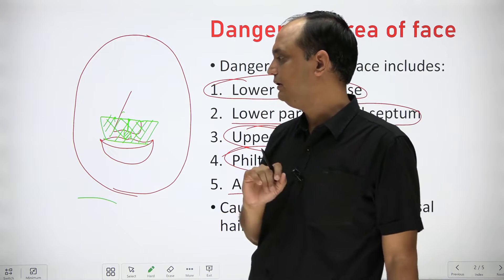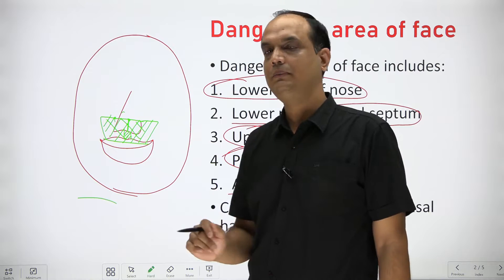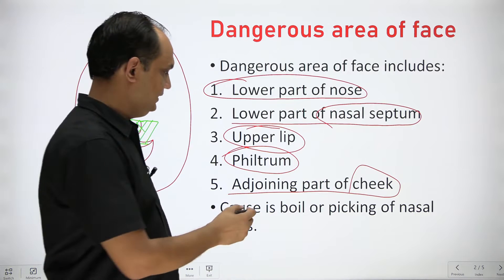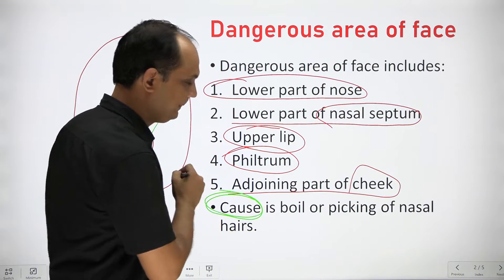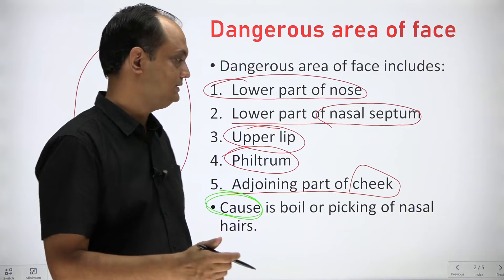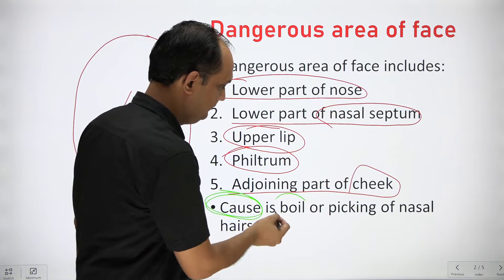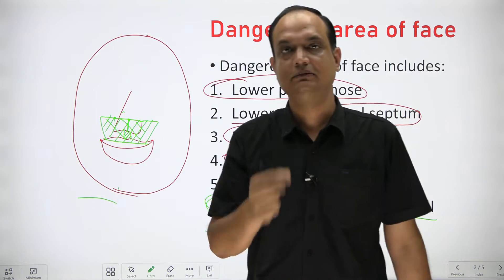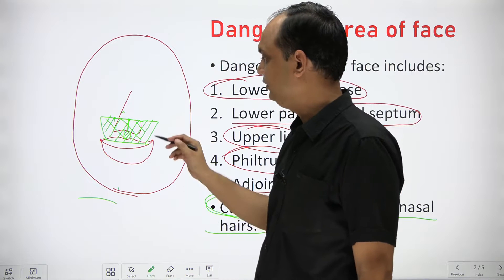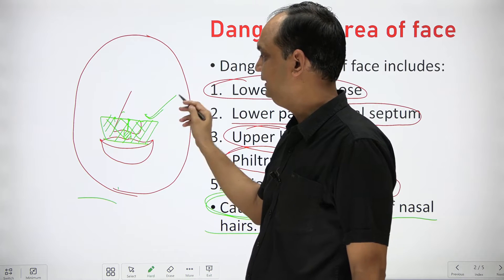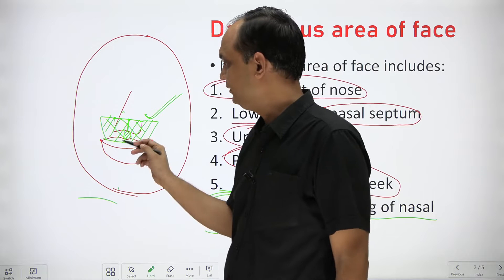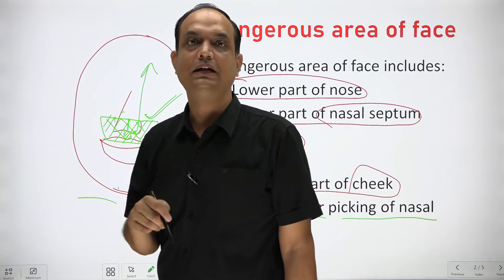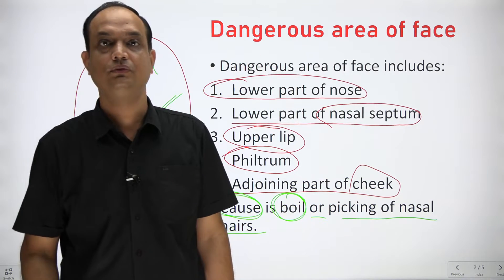The second thing to understand is why this area is called dangerous. The reason is that if there is formation of a boil in this area — for example due to picking of nasal hair causing a bacterial infection — the bacteria from this region can ascend intracranially in a retrograde fashion, which is why this area is known as the dangerous area of the face.